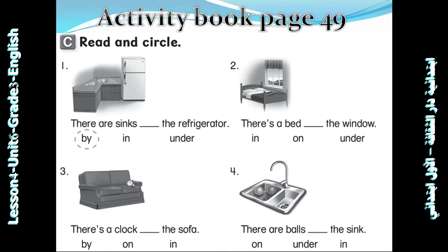Now open your activity book, page 49, Activity C: Read and search. Look at the picture, read the sentence, and circle the correct word. Number one is done: There are things by the refrigerator. The correct word is 'by'. You can write 'by' here — there are things by the refrigerator.